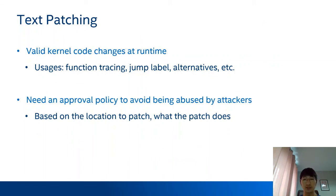In the Linux kernel there are some valid and important changes to kernel text at runtime. For example, function tracing for debugging, jump labels, and alt instructions. These should be allowed, but we can't allow the normal kernel to do text patching directly. Ideally, text patching needs to be done in the secure kernel, and the secure kernel can implement an approval policy to audit the request based on the location to patch and what the patch does.